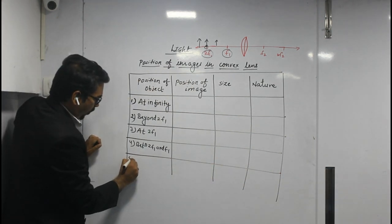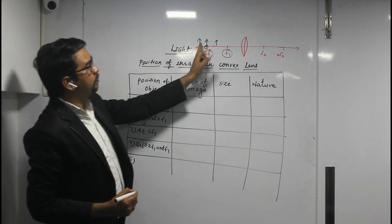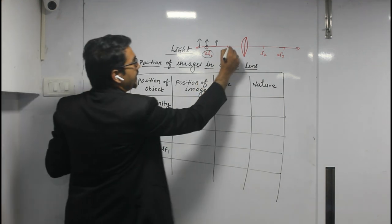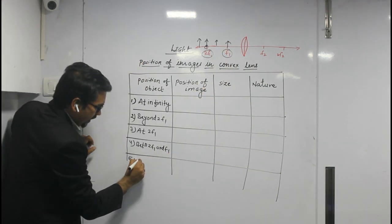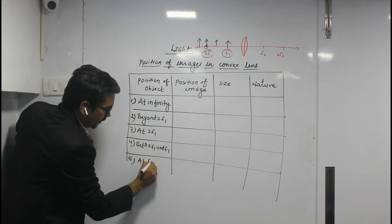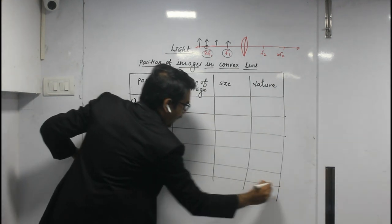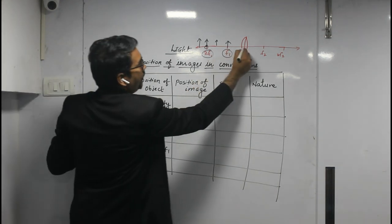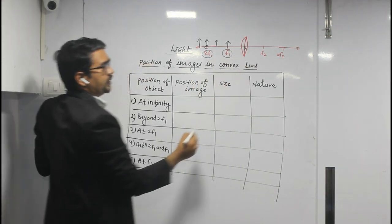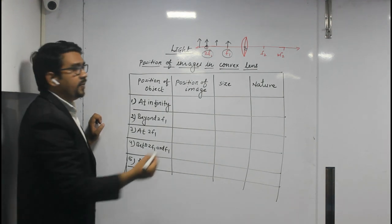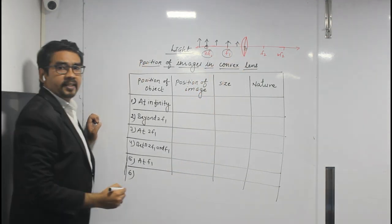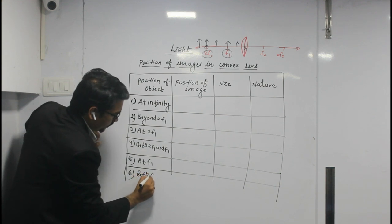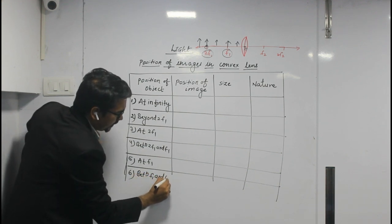The fifth position: as the object moves ahead towards the lens, the fifth position is object is at F1. And the last one, the sixth position, is between F1 and the optical center. You can place the object anywhere between F1 and optical center.